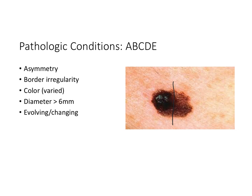Diameter is concerning if it's greater than six millimeters — so if this one is eight millimeters, that would be a concern. Then evolving or changing is looking at changes over time — perhaps this person originally had a nevi that was just this small and stayed the same, and then these changes occurred. This is a great teaching point for patients: have them serially look at their nevi and monitor for any changes and report them quickly.